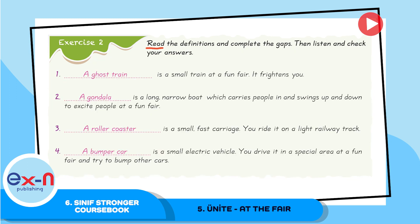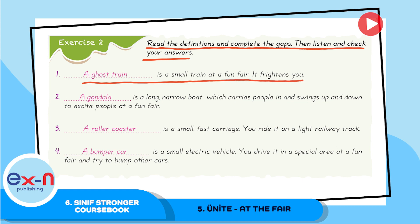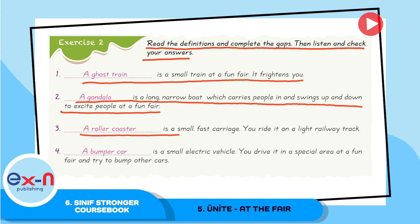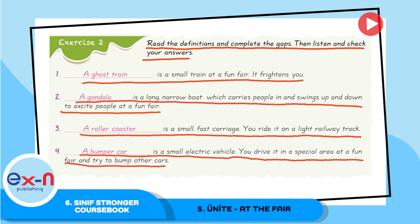Exercise 2. Read the definitions and complete the gaps, then listen and check your answers. A ghost train is a small train at a fun fair — it frightens you. A gondola is a long, narrow boat which carries people and swings up and down to excite people at a fun fair. A rollercoaster is a small fast carriage — you ride it on a light railway track. A bumper car is a small electric vehicle you drive in a special area at a fun fair and try to bump other cars.